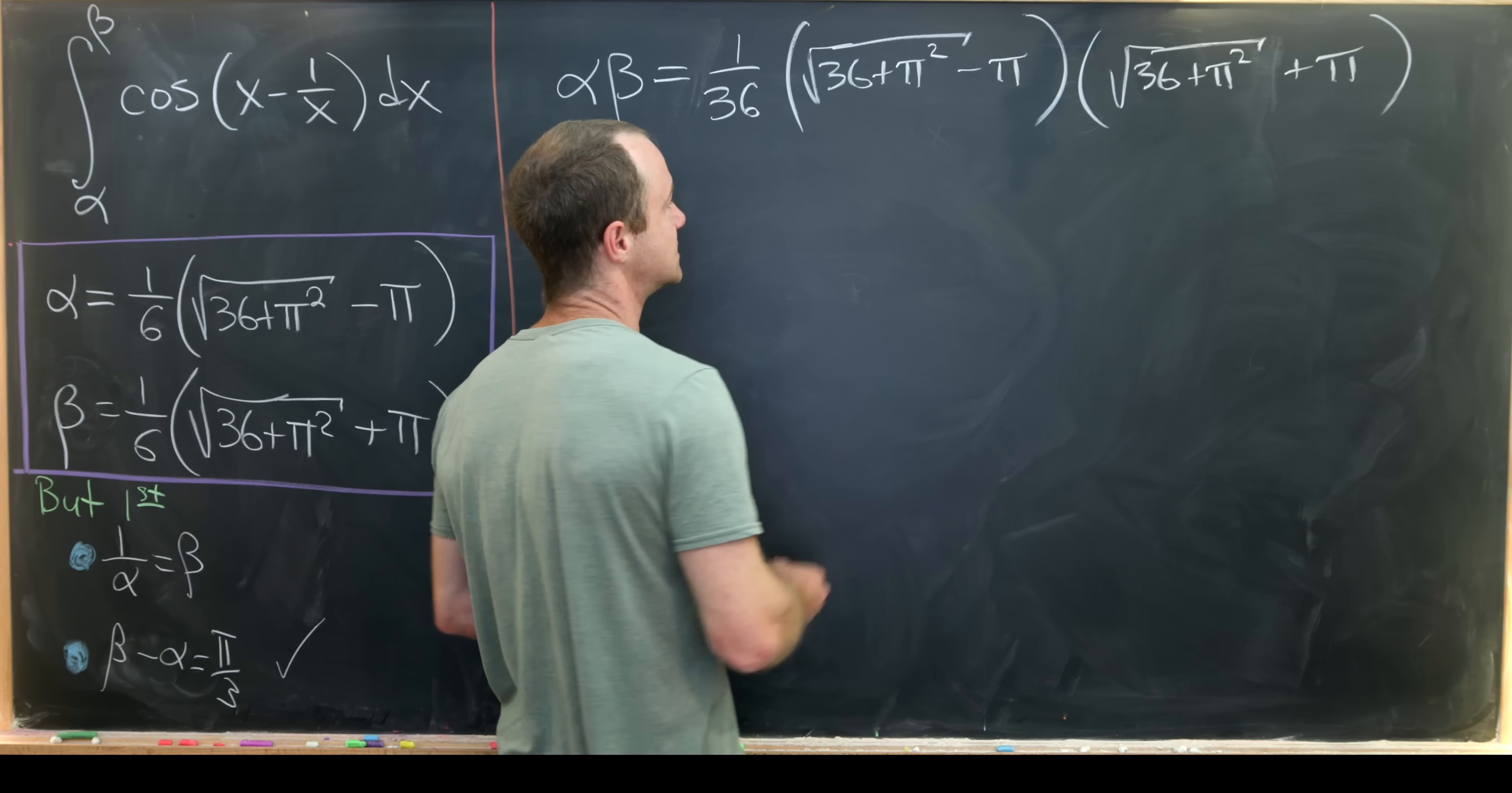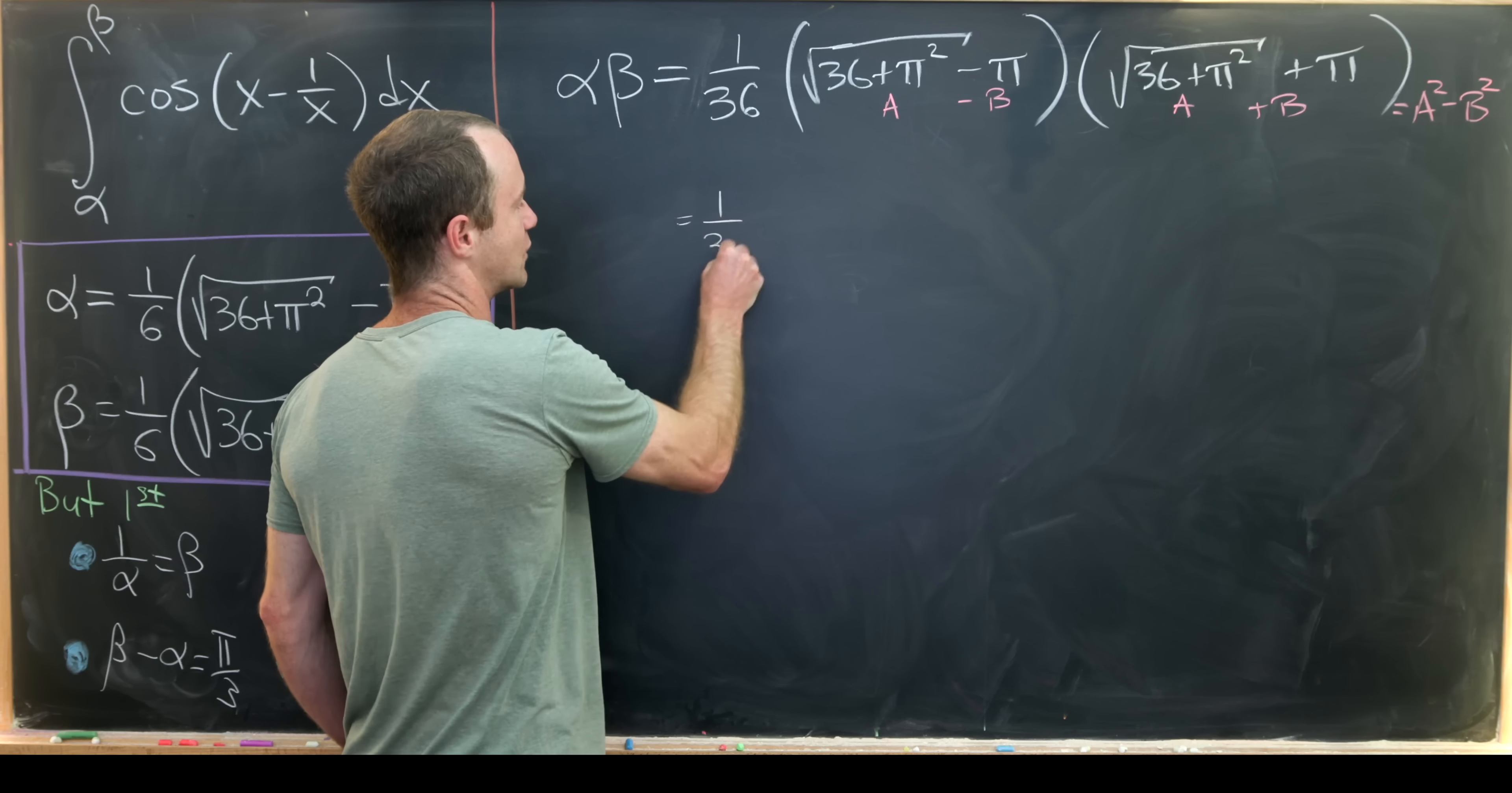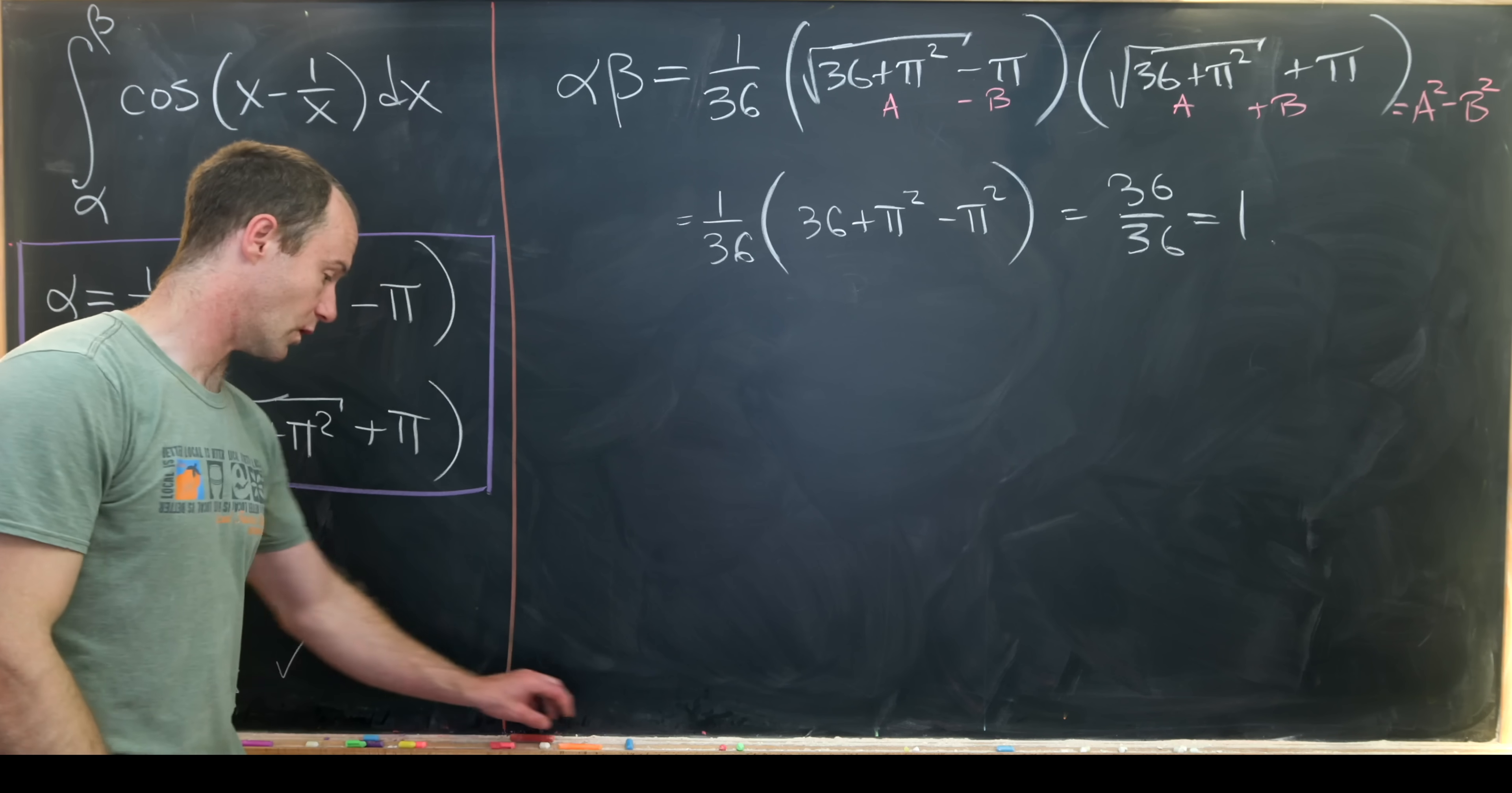But now let's notice that we've got a difference of squares situation here. If you think about this as like a minus b and this is like a plus b, if we multiply those out we get a squared minus b squared. So let's see what that leaves us with. That'll leave us with 1 over 36, and then we'll have a squared which is 36 plus pi squared minus b squared which is pi squared. So in the end we have 36 over 36 which is very clearly 1.